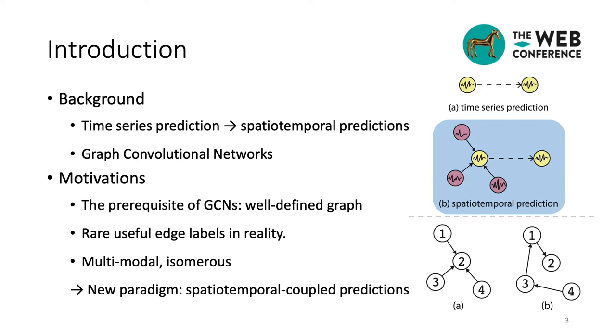In such context, graph convolutional networks, or GCNs, have become the most effective models. The prerequisite of the GCNs is a well-defined graph. However, in many real-world scenarios, there exists only rare useful spatial information, which limits the performance of GCNs. Besides, the spatial dependencies among time series are usually multimodal and isomerous, which makes the situation even worse. Therefore, we argue that the current GCN paradigm for spatiotemporal predictions could be improved.